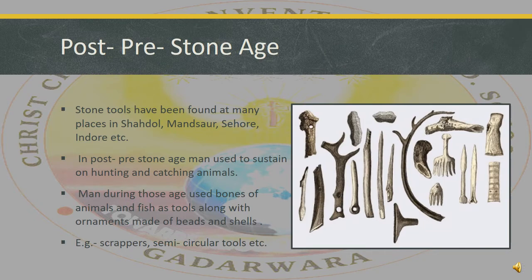Post-Pre-Stone Age is the third subcategory of Pre-Stone Age. Stone tools have been found at many places in Shahdol, Mansur, Sihor, Indore, etc. In this age, men used to sustain on hunting and catching animals. Men used bones of animals and fists as tools, along with ornaments made of beads, for example scrapers, semicircular tools, etc. As you can see in this image, how all these tools look.